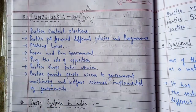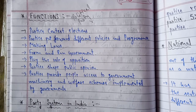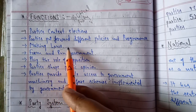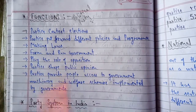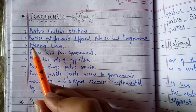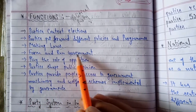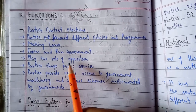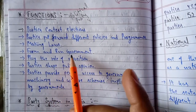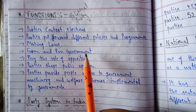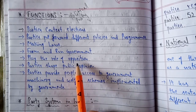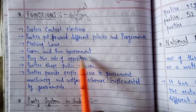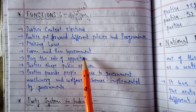Parties are involved in making laws — the three important organs of government are legislature, judiciary, and executive. Parties also form and run the government; without political parties, government cannot function properly. They also play the role of opposition. In a country like India with so much diversity, we require an opposition party that always keeps a check on the functioning of the ruling party.